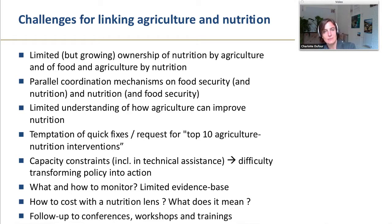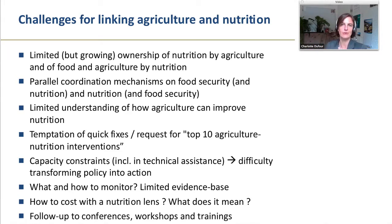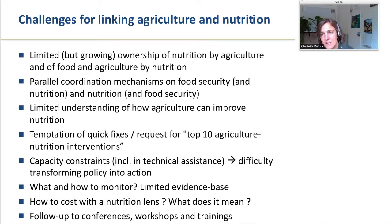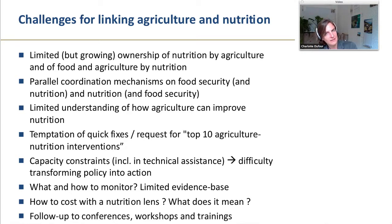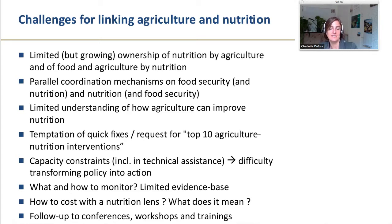The coordination mechanisms at global, regional, and country levels are often still slightly separate — nutrition largely in health-based coordination, and food security and agriculture in a different group. There's a limited understanding of how agriculture can concretely improve nutrition, which is where the ten points come in. There's a temptation to use quick fixes — people ask, where's the Lancet series for agriculture? Give us the top ten agriculture interventions for nutrition. But the answer is 'it depends' — are you in a pastoralist context or an urban area? That context specificity and systemic approach is sometimes a difficult message to pass through.